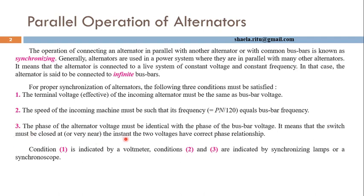The third condition is that the phase of the alternator voltage must be identical with the phase of the bus bar voltage. That means, the phase sequence of the incoming alternator and the bus bar must be the same, and the phase angle must also be maintained the same. The first condition can be observed using a voltmeter, and the second and third conditions can be observed using synchronizing lamps to complete synchronization.